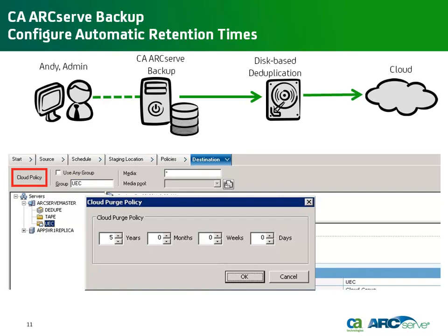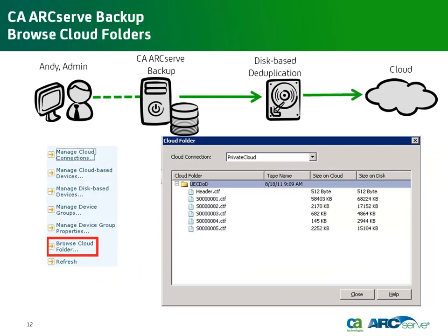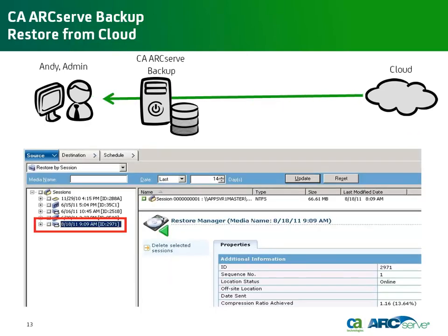Cloud groups have a special icon represented by a folder with a cloud, so he can quickly identify them. Andy notices an additional feature that lets him browse the cloud folder and compare the session sizes between the cloud storage and what's on disk. When Andy needs to restore data that is no longer located on his disk-based device, he can browse the sessions located on the cloud just as he would with any other backup destination.